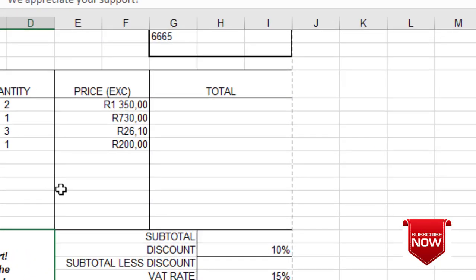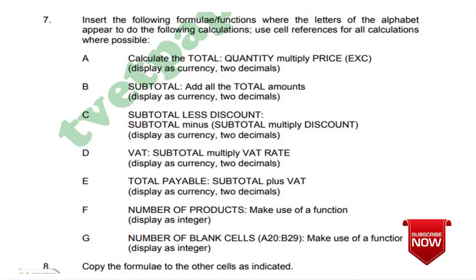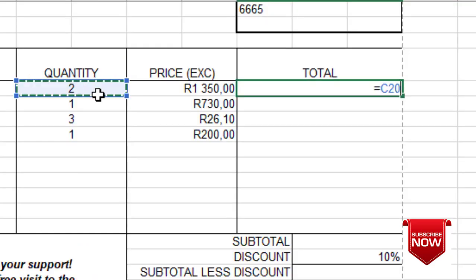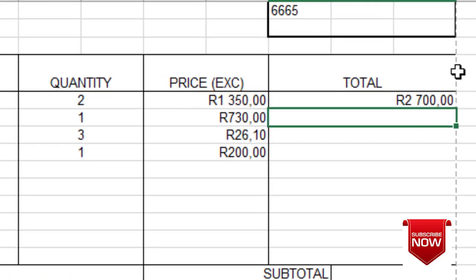Looking at the question paper, we are told that instruction 7 says: insert the following formulae or functions where the letters of the alphabet appear to do the following calculations — use cell references for all calculations where possible. Calculation A is where we calculate quantity multiplied by price, which is the total. We start by typing equals, click on quantity, then multiply by, then click on price.